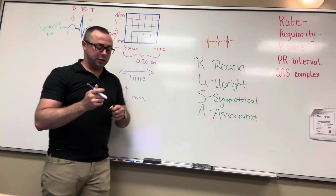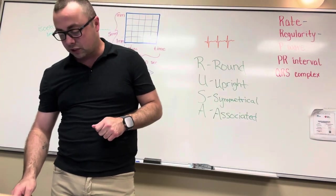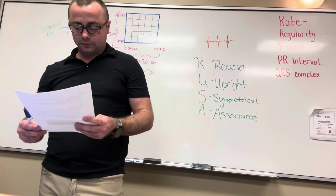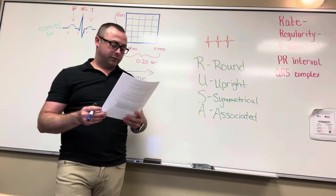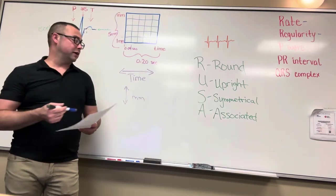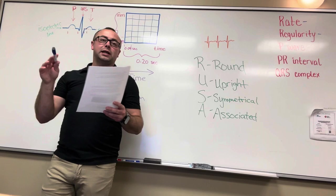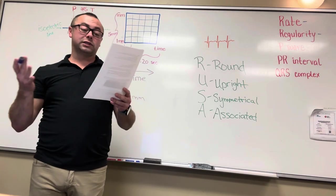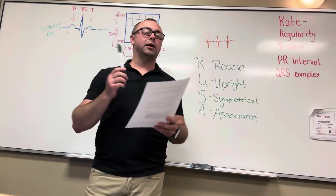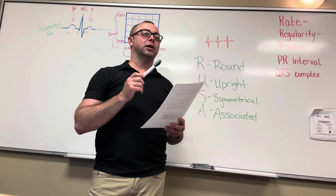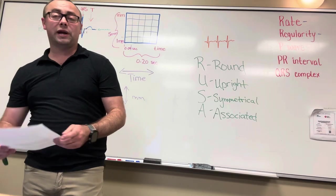Associated means the P wave has to be close to the QRS. After the atria contracts, the ventricle has to contract as well, so it's got to be right there. If your P wave looks like a mountaintop — peaked — or if it's flattened, notched, inverted, or looks like the blade of a saw, then we know it's not originating in the SA node. It's got to be another pacemaker site trying to take over.